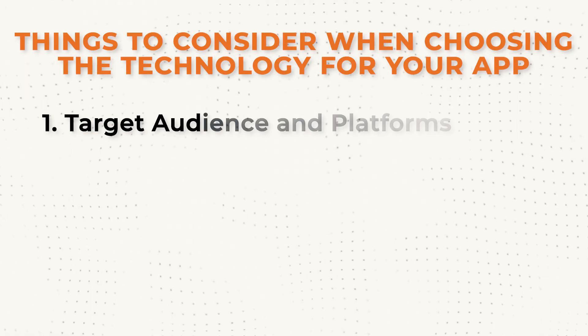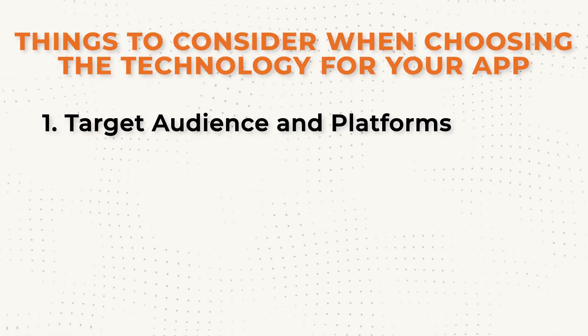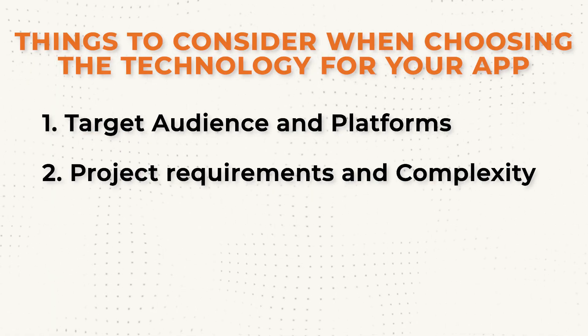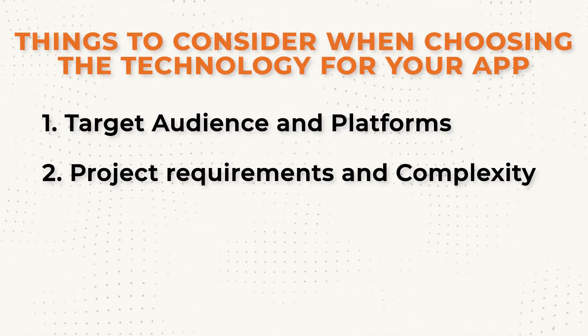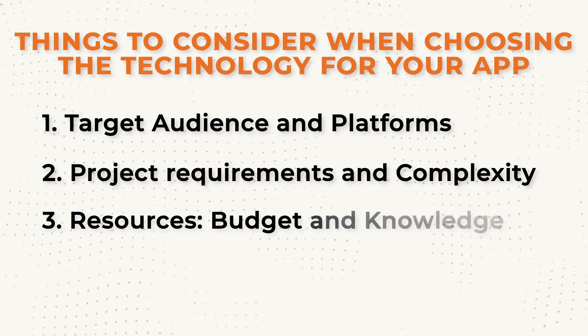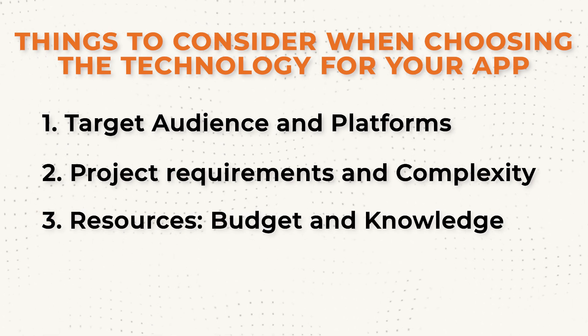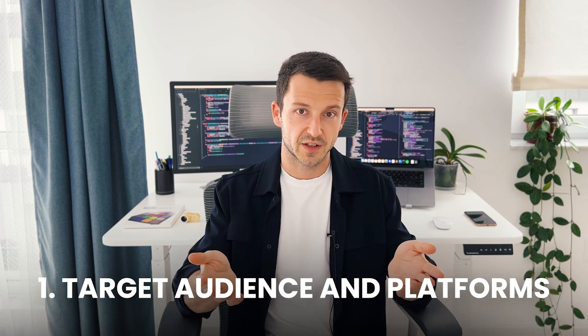There are three main things that you need to consider when choosing the technology for a mobile app. First, your target audience and platforms. Then, the project requirement and complexity. And finally, resources — your budget and your knowledge. I have a story to tell for each one and a couple of key points to consider. So let's take them one by one, starting with target audience and platforms.